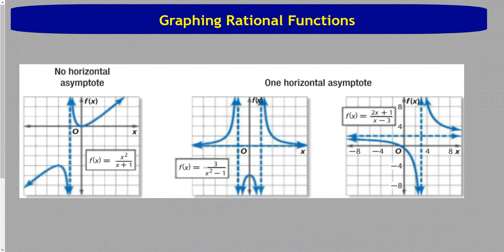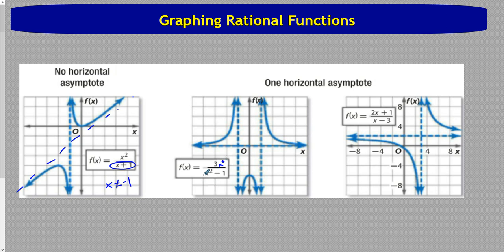Here are three examples. Example one: x squared over x plus 1. The degree of the top is bigger than the degree of the bottom — degree 2 over degree 1 — so there is no horizontal asymptote. There's a different kind of asymptote we'll talk about in a second. For vertical asymptotes, the denominator equals 0 when x equals negative 1, so we have a vertical asymptote at x equals negative 1.